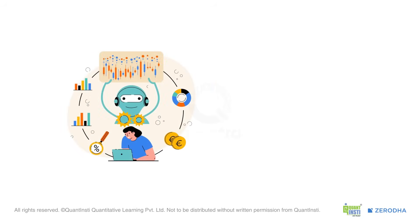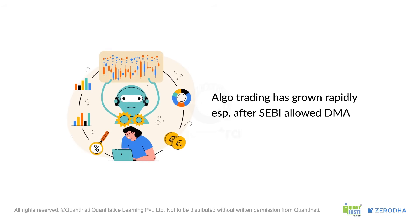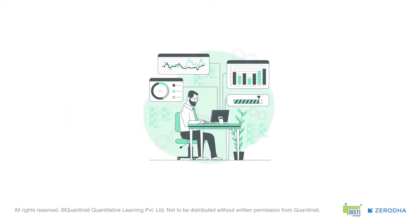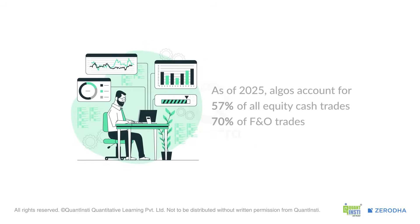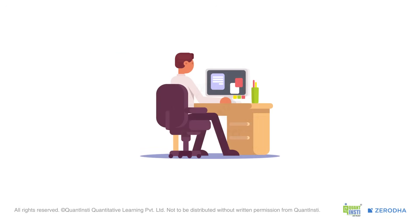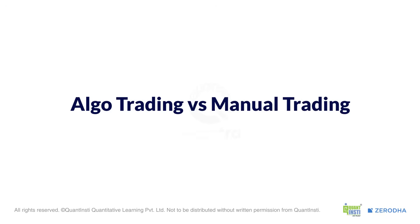In India, algorithmic trading has grown rapidly over the past decade, especially after SEBI allowed Direct Market Access (DMA) in 2008. Today it's a huge part of the market. As of 2025, algos account for 57% of all equity cash trades and 70% of futures and options trades on exchanges like the NSE — a significant increase compared to its early days. This shows how widely accepted and important algo trading has become. We've seen that algo trading is a systematic, data-driven approach that's already dominating the Indian stock market. But why is it so popular, and what are its advantages over traditional manual trading?